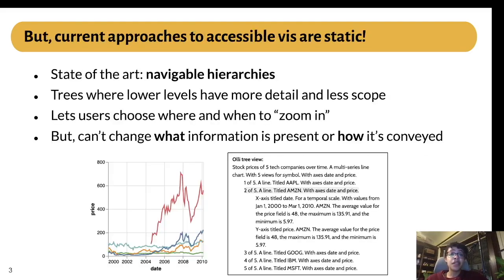The current state-of-the-art approach to accessible visualizations is navigable hierarchies. These hierarchies present text in a tree shape. Higher levels of the tree encompass more of the data and provide a broader overview, whereas lower levels focus on a particular subset and provide more granular details. This approach lets users start with a general overview of the data and then choose for themselves where and how deeply they want to focus. However, users aren't able to change what information is present in the text or how it's conveyed.